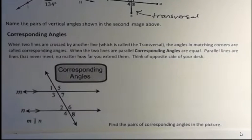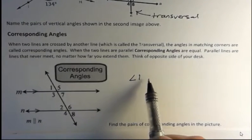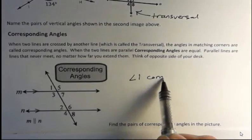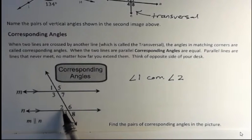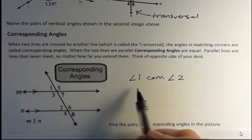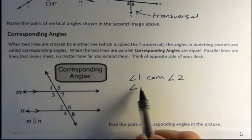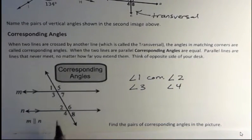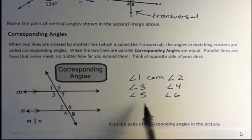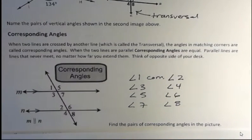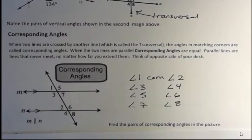If I'm talking about corresponding angles, they're the angles in matching corners. So angle one is corresponding to angle two. Notice that when you look at this corner and jump down here, those are the same corners. That means three is corresponding to four, five is corresponding to six, and seven is corresponding to eight. The ones that match each other from one line to the next are the corresponding angles.